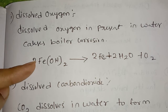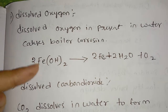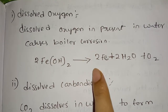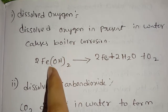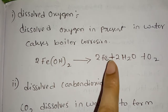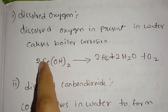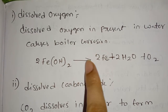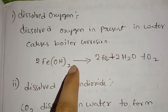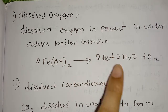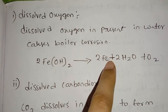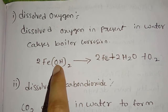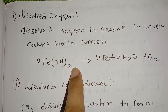The chemical reaction for dissolved oxygen corrosion: Fe reacts to form 2Fe(OH)2. Fe gives 2Fe²⁺, and 2Fe plus 2H₂O reacts. 2H₂O gives 2H₂, so here we have 2H₂O₂.